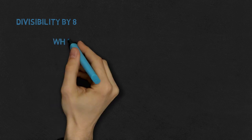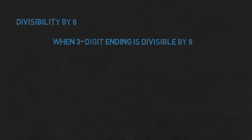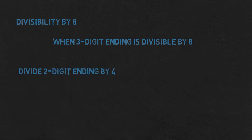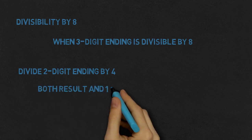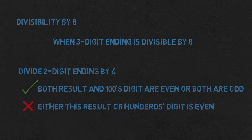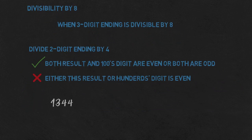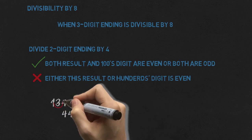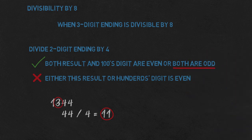Similarly to 2 and 4, for divisibility by 8 we look at the last digits — but this time we check if the 3-digit ending is divisible by 8. Here's a small improvement: divide the 2-digit ending by 4, then look at the hundreds digit. If both results are even or both are odd, then the whole number is divisible by 8; otherwise it isn't. For example: 1,344 — 44 divided by 4 is 11, which is odd, and we have 3 hundreds, also odd. Both odd, so 1,344 is divisible by 8.